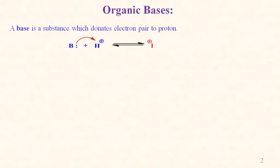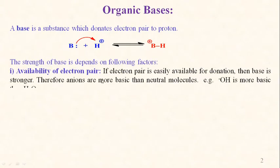A base is a substance which donates an electron pair to a proton and gives a conjugate acid BH+. The strength of a base depends on the following factors. First is availability of the electron pair: if the electron pair is easily available for donation, then the base is stronger. Therefore anions are more basic than neutral molecules — for example, OH⁻ ion is more basic than water.